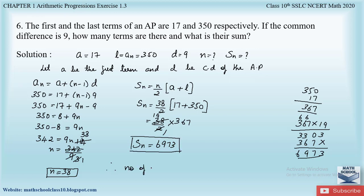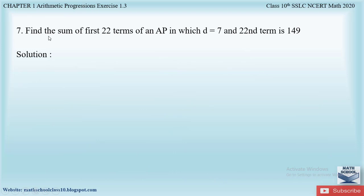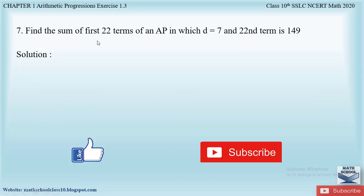Therefore the number of terms n = 38 and the sum Sn = 6973. This is how we solved this problem. If you have any doubts, please comment below. In my next video I will be solving question number seven from exercise 1.3. Till then, please like my video and subscribe to my channel. Thank you.